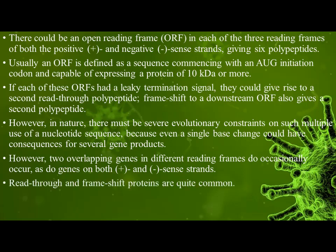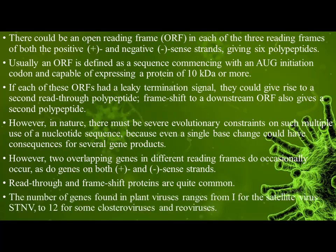Read-through and frameshift proteins are quite common. The number of genes found in plant viruses ranges from one for the satellite virus STNV, to 12 for some closteroviruses and reoviruses.